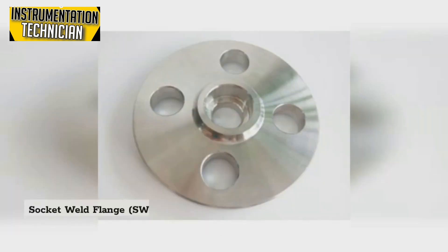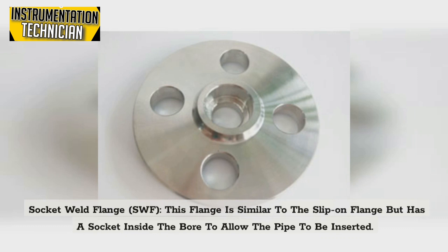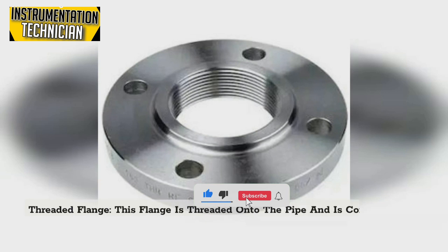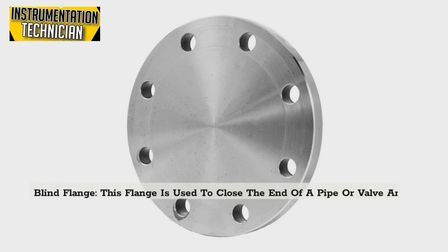Socket weld flange (SWF): This flange is similar to the slip-on flange but has a socket inside the bore to allow the pipe to be inserted. Threaded flange: This flange is threaded onto the pipe and is commonly used in low pressure applications.